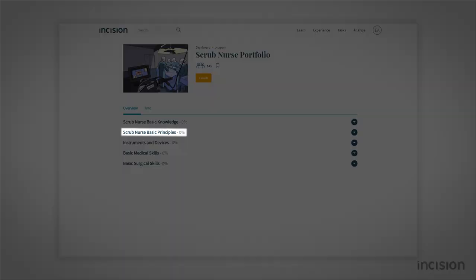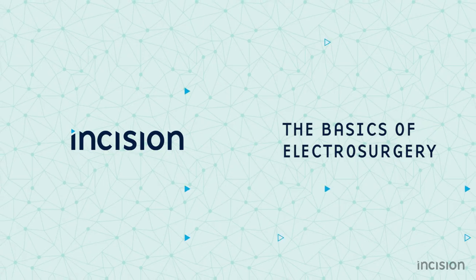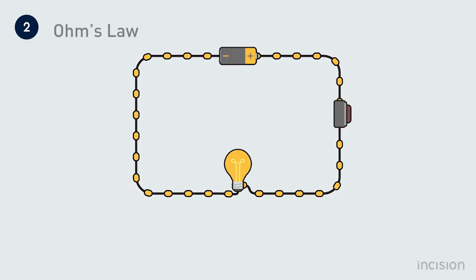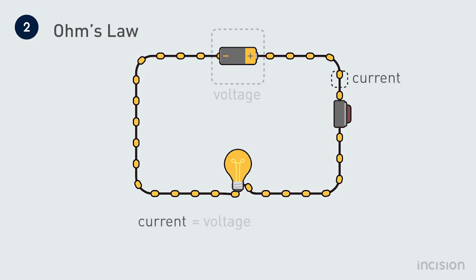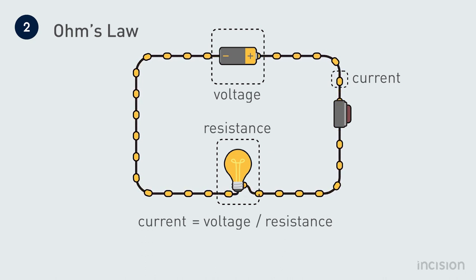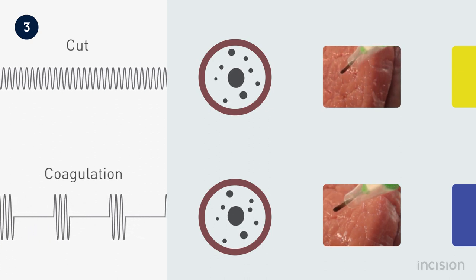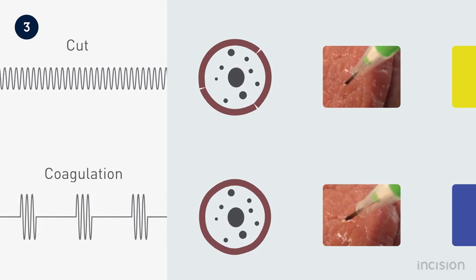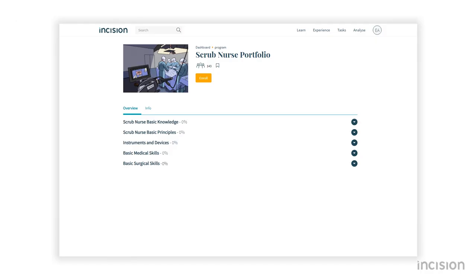An example of a course on basic principles is the course on the basics of electrosurgery. In this course, the basics of electrosurgery are explained using animations to give a clear understanding of electricity and its risks. A lot of attention is paid to the different types of electrosurgery and their underlying principles.